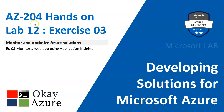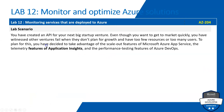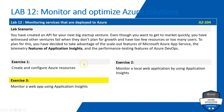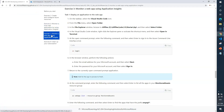Hello friends, welcome to EZ24 lab 12 exercise 3. Here is the lab scenario — so far we are done with exercise 1 and exercise 2, and in this video we will work on exercise 3. It says: monitor a web app using Application Insights. Let's go to the instruction page — here we are, exercise 3: monitor a web app using Application Insights.